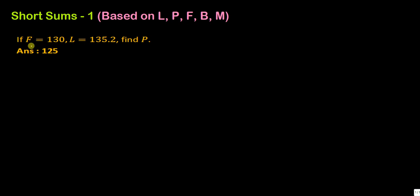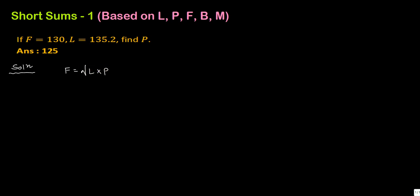This is our first sum. If Fischer's index number equals 130 and Laspeyres equals 135.2, find Paasche's index number. It is a very easy sum. Write down the formula of Fischer: Fischer equals under root of Laspeyres into Paasche. Therefore, Fischer is equal to 130.